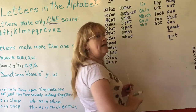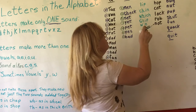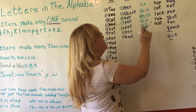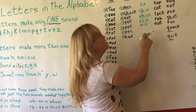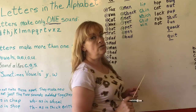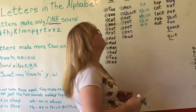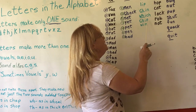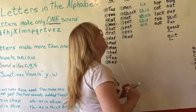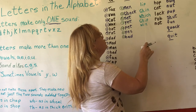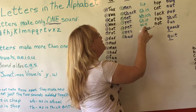Now our I words for today — I says 'ih.' So we have: L-I-P — lip. C-H-I-N — chin (those CH letters stay together). W-H-I-C-H — which (WH also stays together). C-H-I-P — chip. W-I-N — win.